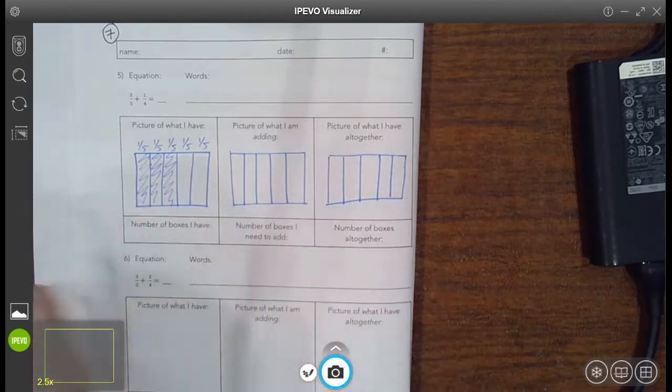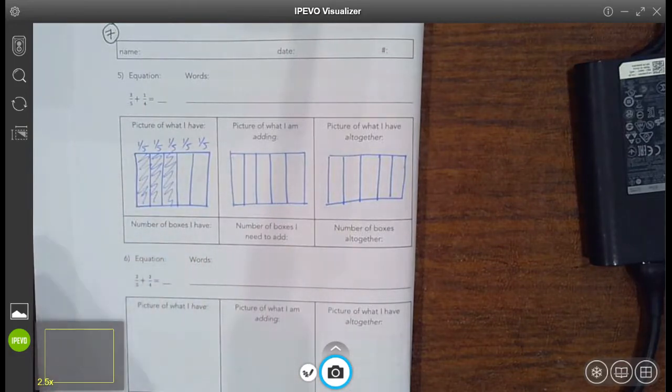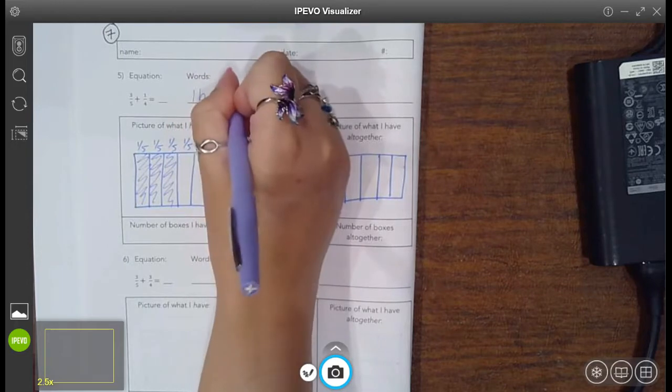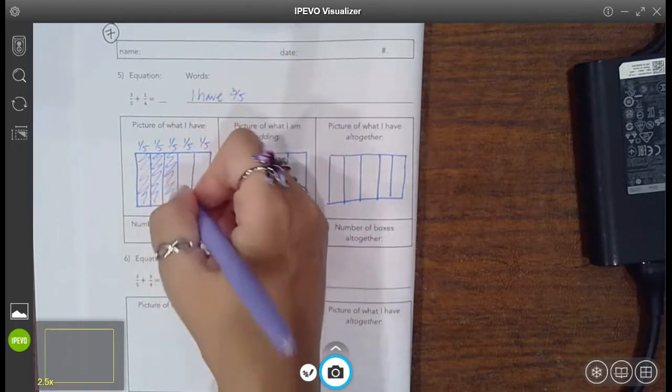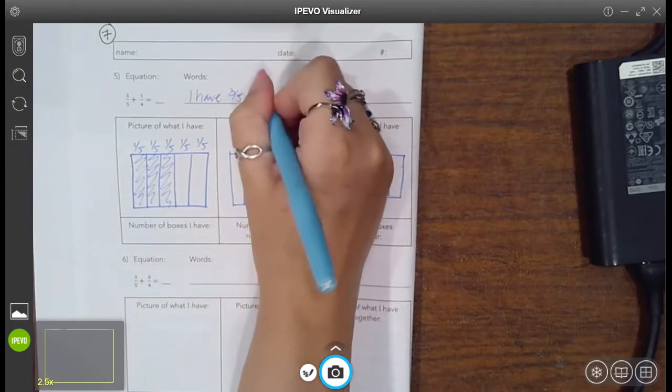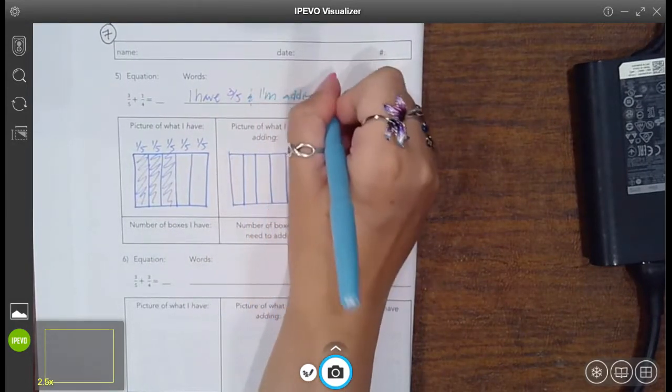All right. And then you want to add one-fourth. So you started with, you have three-fifths. Okay, right? Three-fifths. And then I'm adding one-fourth.